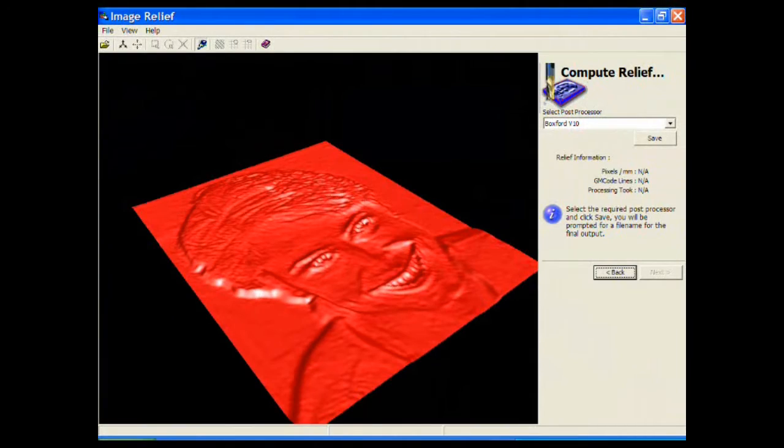Using our image relief import wizard, photographs can be imported and machined, thus producing 3D hologram photographs.